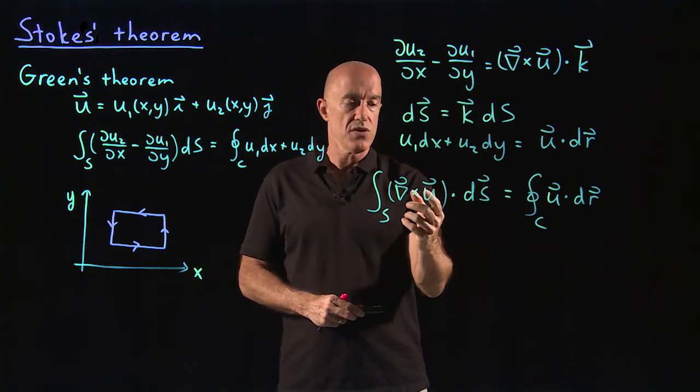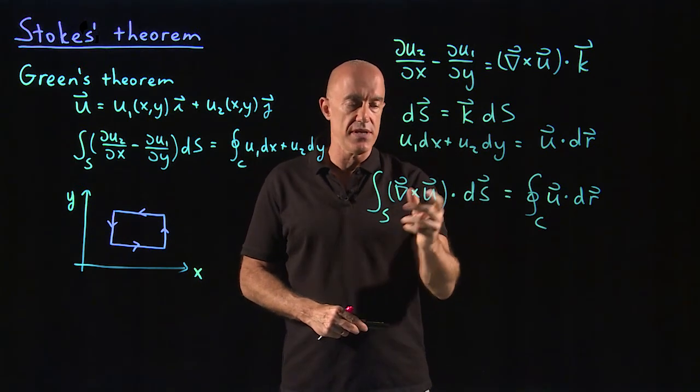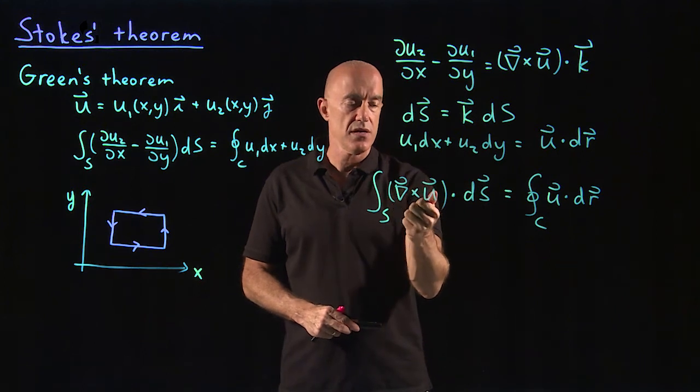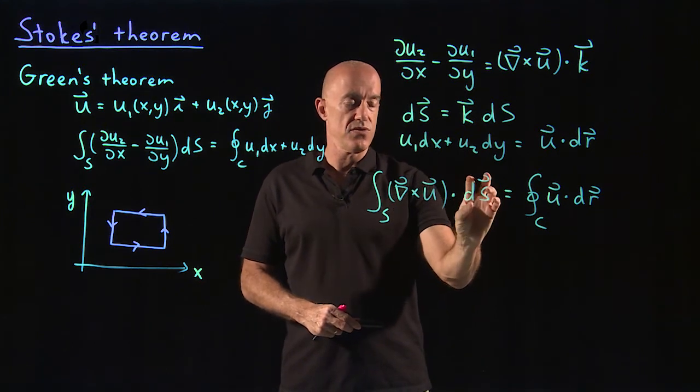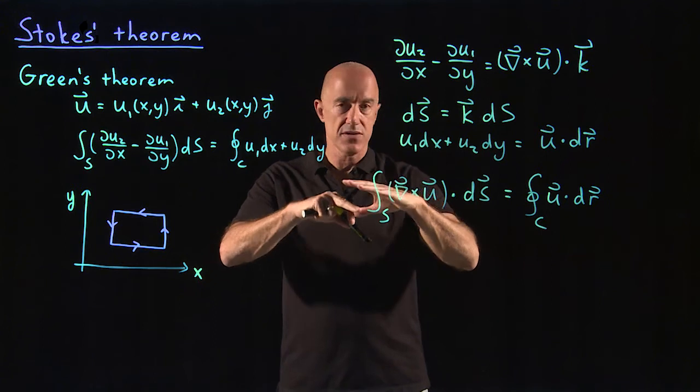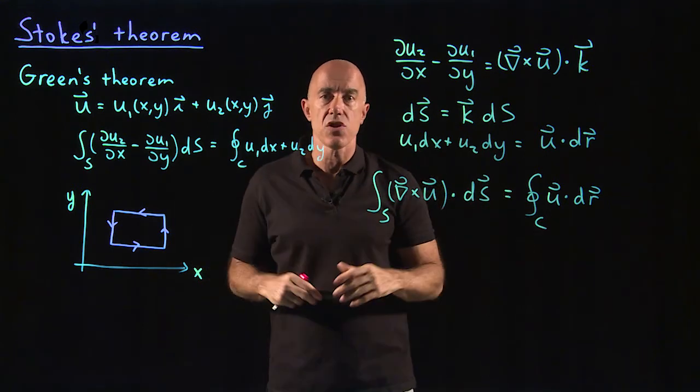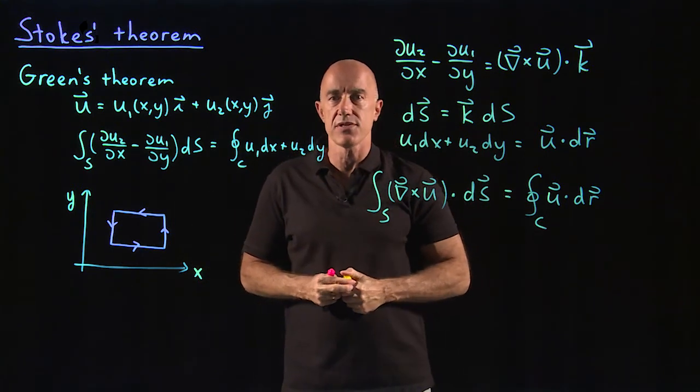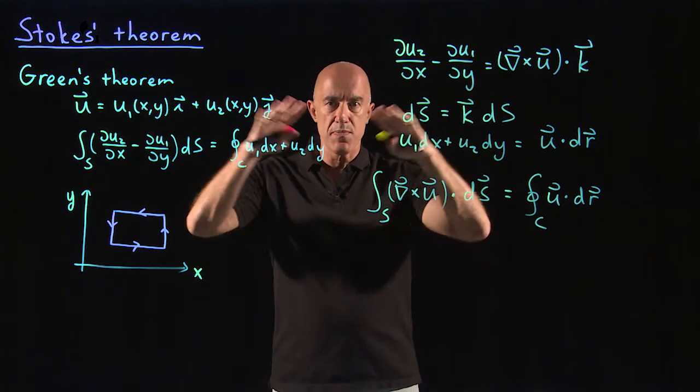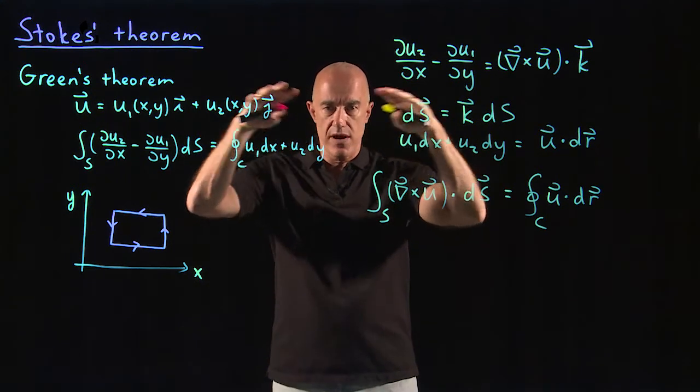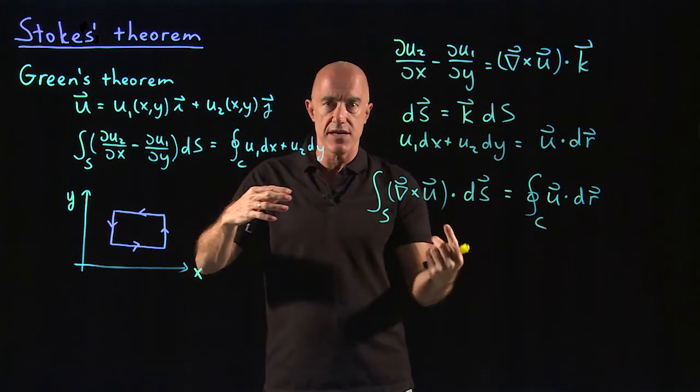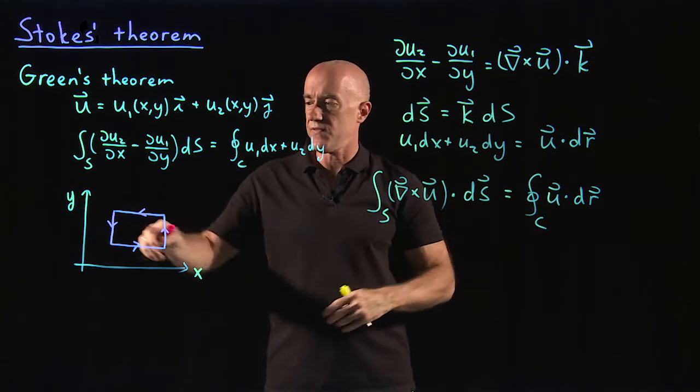So u is a vector field in three dimensions. This is the curl. We have some surface, not a closed surface like in the divergence theorem, but an open surface that's bounded by a curve.